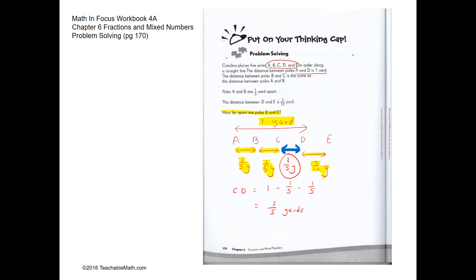So the final distance between B and E. So BE would be 1 fifth plus 3 fifths, 3 fifths plus 7 tenths, which is 1 fifth plus 3.